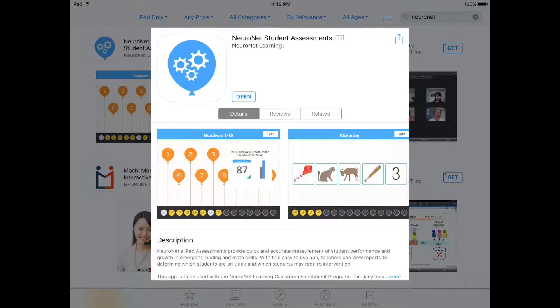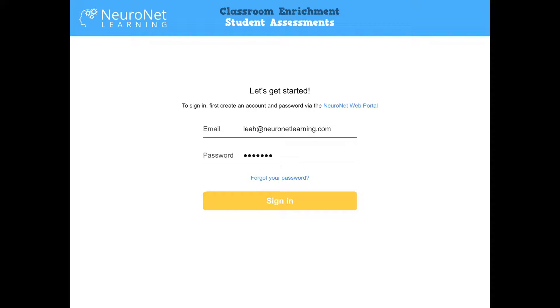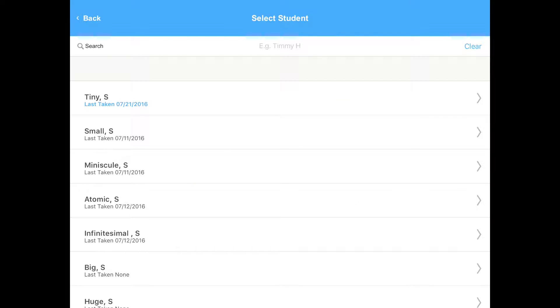To download the Neuronet student assessment app for the iPad, search Neuronet on the App Store with your iPad. First you will log into the iPad app with your teacher account. Once you log in, choose the student you would like to assess.